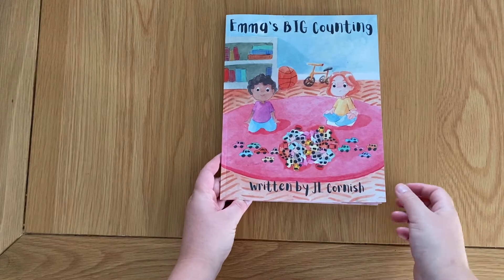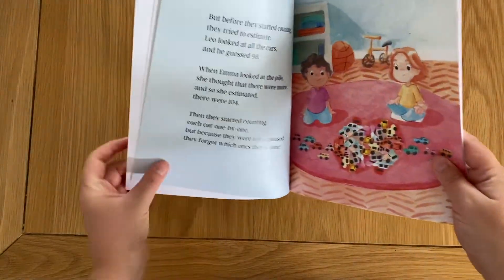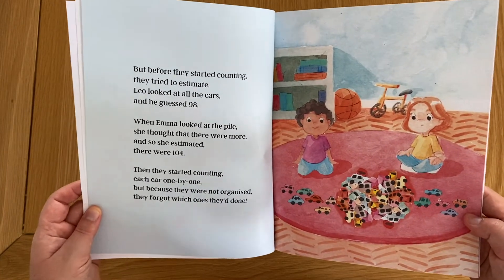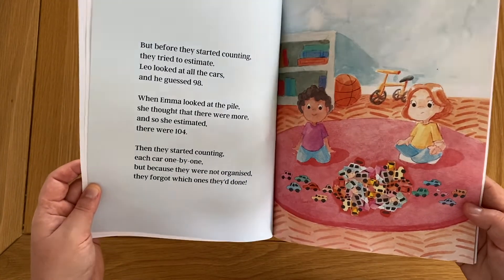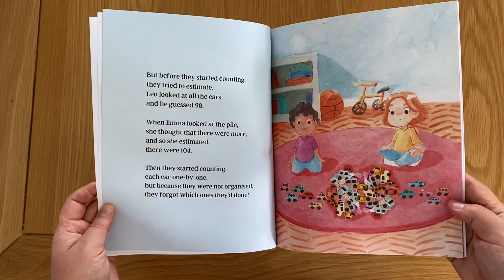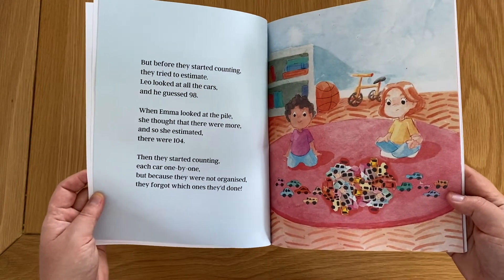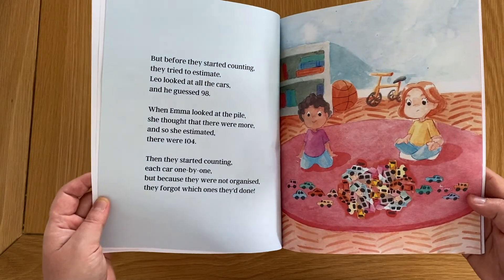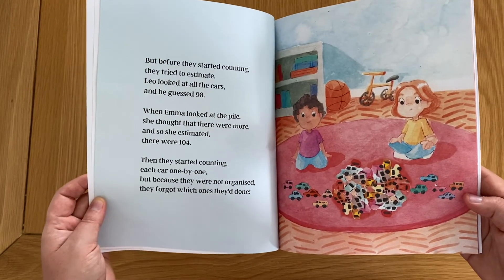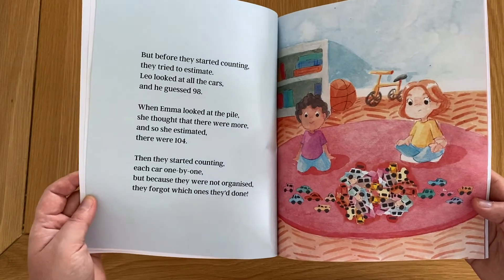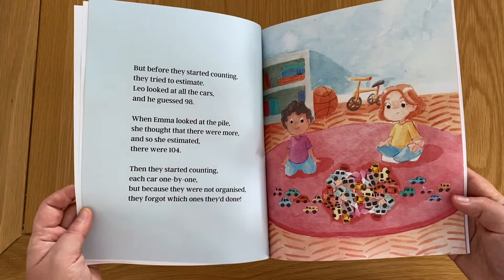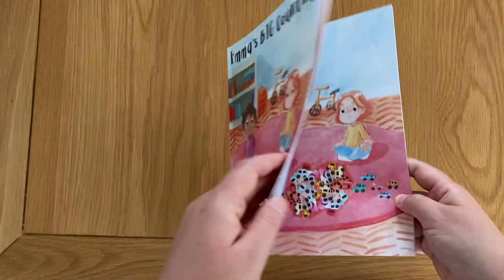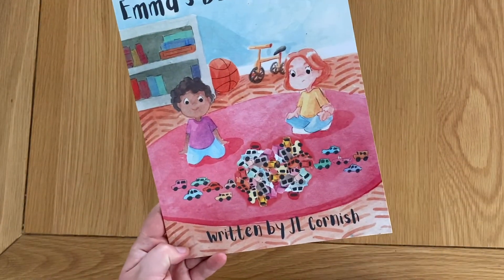So I like to use Emma's Big Counting because on this page before Emma and Leo start counting their big collection they start to estimate and I like to use this page because this is where we talk about what a reasonable estimate is. So we would talk about what would be a good estimate of this collection. Would two thousand be a good estimate? Would four be a good estimate? And we talk about why and that's a really good way to get the kids thinking about how to make a good estimate based on what you can see of the quantity.